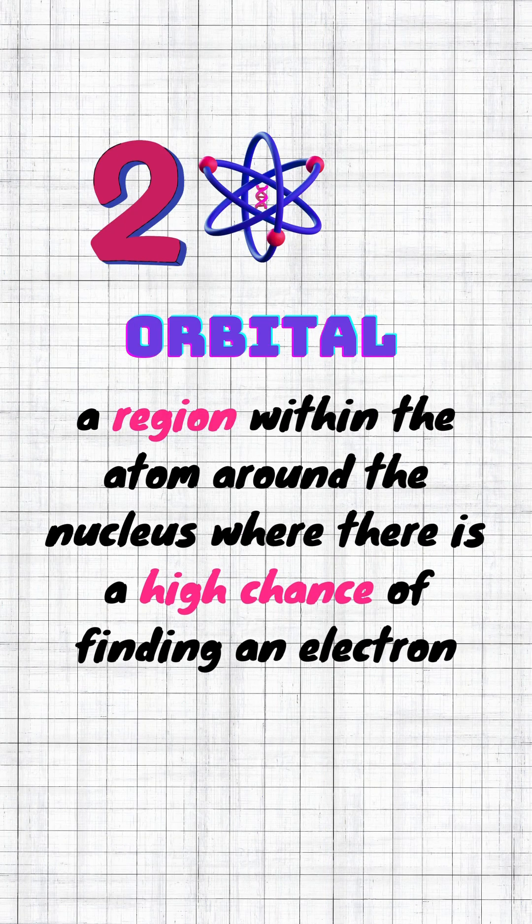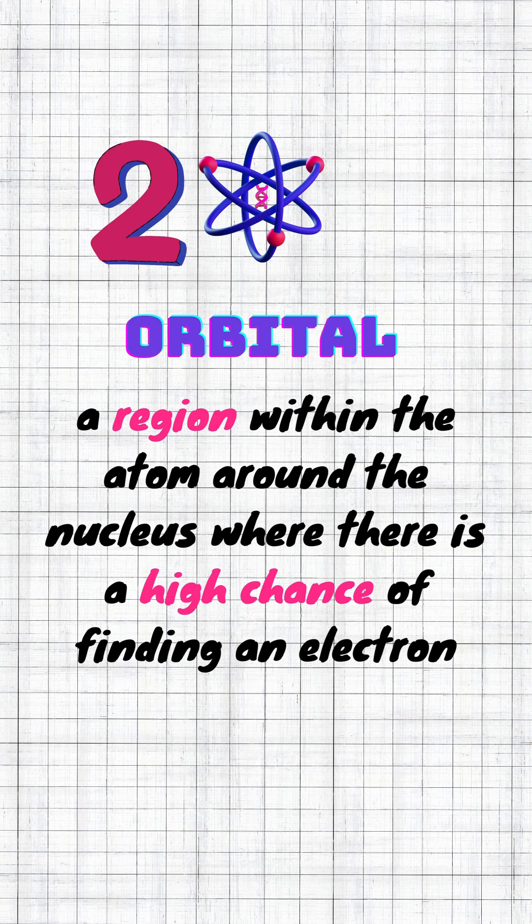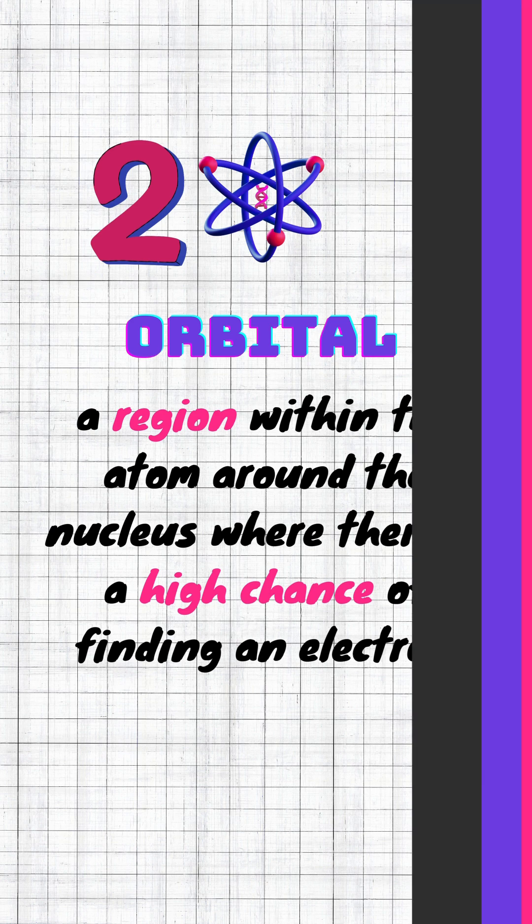Number 2 is the orbital, which is a region within the atom around the nucleus where there is a high chance of finding an electron.